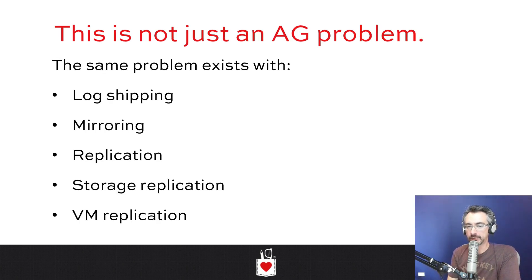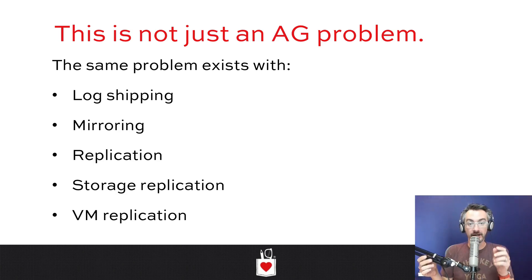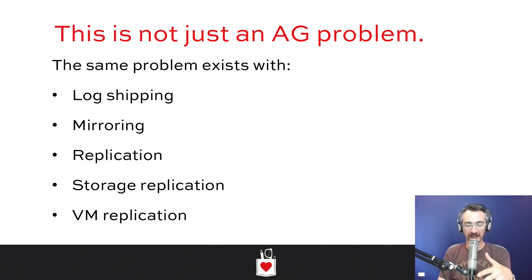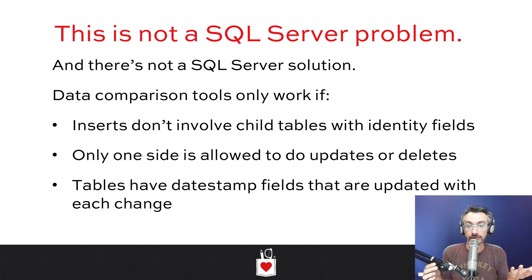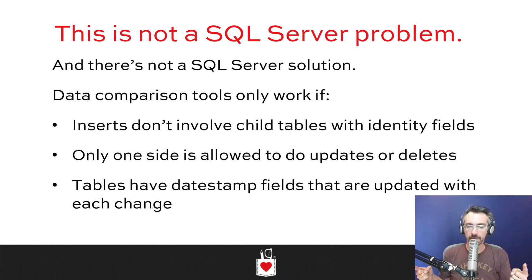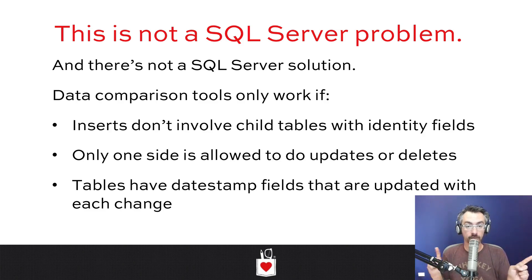This isn't just an availability groups problem either. This is anything that does changes in a database — any kind of relational database. When I force a database online with allowed data loss, that's what that means: I'm going to end up losing data. People will sometimes say, I'm just going to go get Redgate Data Compare or Schema Compare and look at the differences between those databases. But that's just the starting point — take order ID number two: it's in one database and not in the other. Things like Redgate Data Compare are just going to tell you that order ID three is different on both systems.